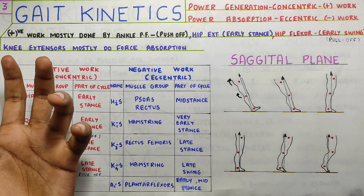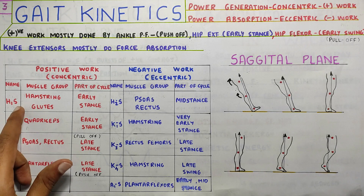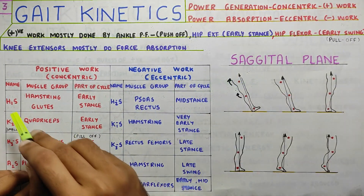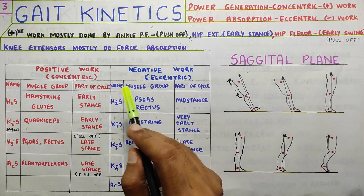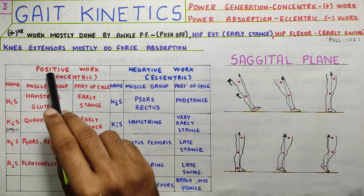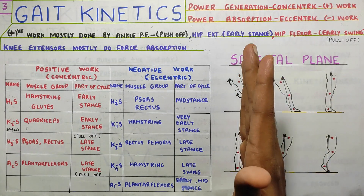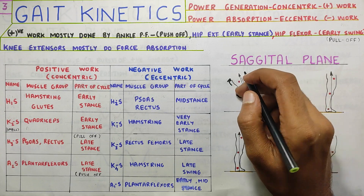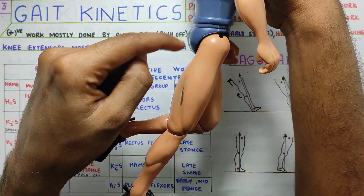Now let's go through other activities in order throughout the gait cycle. At the hip joint, H1S is the first power event — S means sagittal plane, H is hip. During early stance, there is positive work with the help of hamstrings and glutes. The GRF is anterior, tending to cause flexion at the hip joint, but the glute muscle works concentrically to create hip extension. When in stance phase and driving your hip forward, this hip extension is caused by concentric activity of the glutes.